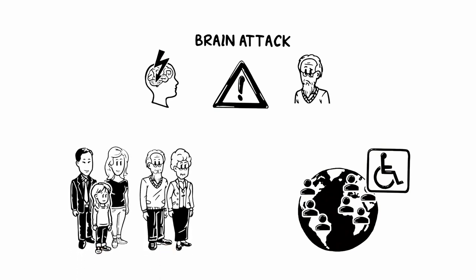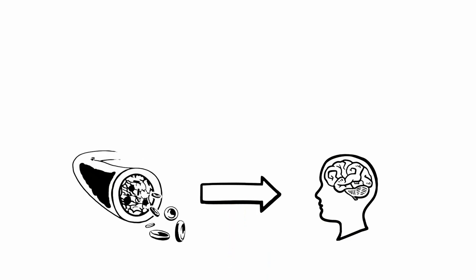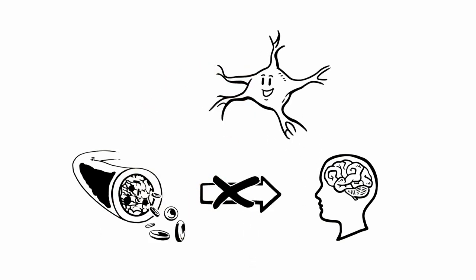But what is a stroke? Our brain needs oxygen and nutrients which it gets from our blood. When a stroke strikes, the blood can't get to where it needs to be. As a result, brain cells don't get enough oxygen and nutrients and become damaged or die.